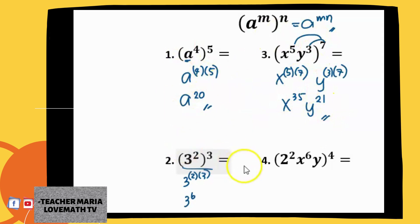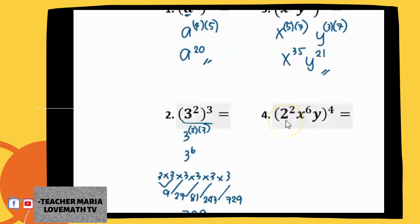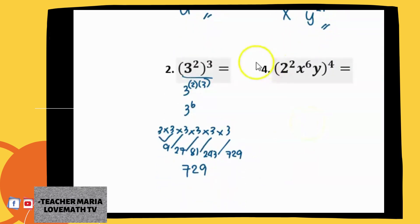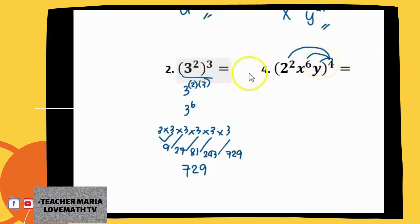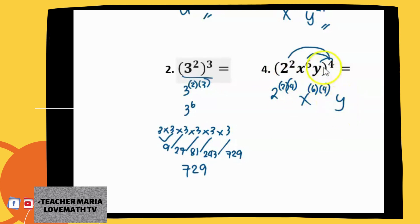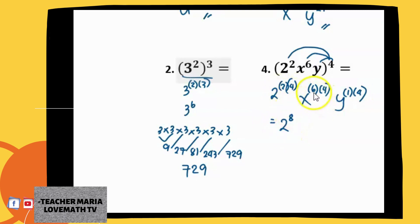Now we apply the same idea to number 4, because we have both numbers and letters. We have 2 squared, x raised to 6, and y — all raised to 4. You have to distribute 4 to all the exponents. So you get 2 raised to 2 times 4, x raised to 6 times 4, and for y — since there is no written exponent, it is understood to be 1 — so 1 times 4. That gives 2 raised to 8, x raised to 24, and y raised to 4.